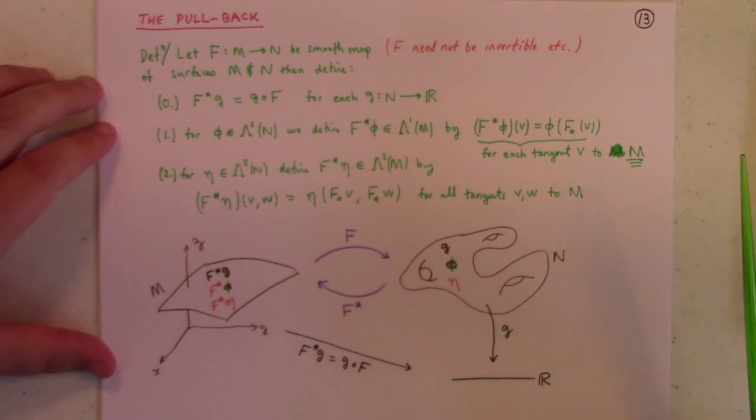Then for a one form, what you do is, as you follow this definition, suppose phi is a one form on N. Then the pullback of phi, F pullback phi, acting on a vector V, so we define a one form in terms of its action on vectors, is just given by the one form phi acting on the push forward, or the differential of F acting on V.